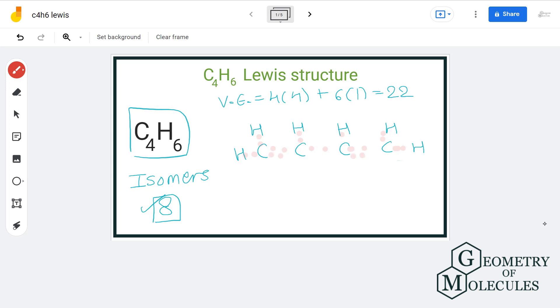Thus each atom present in this structure has complete outer shell and the name of this structure is buta-1,3-diene.